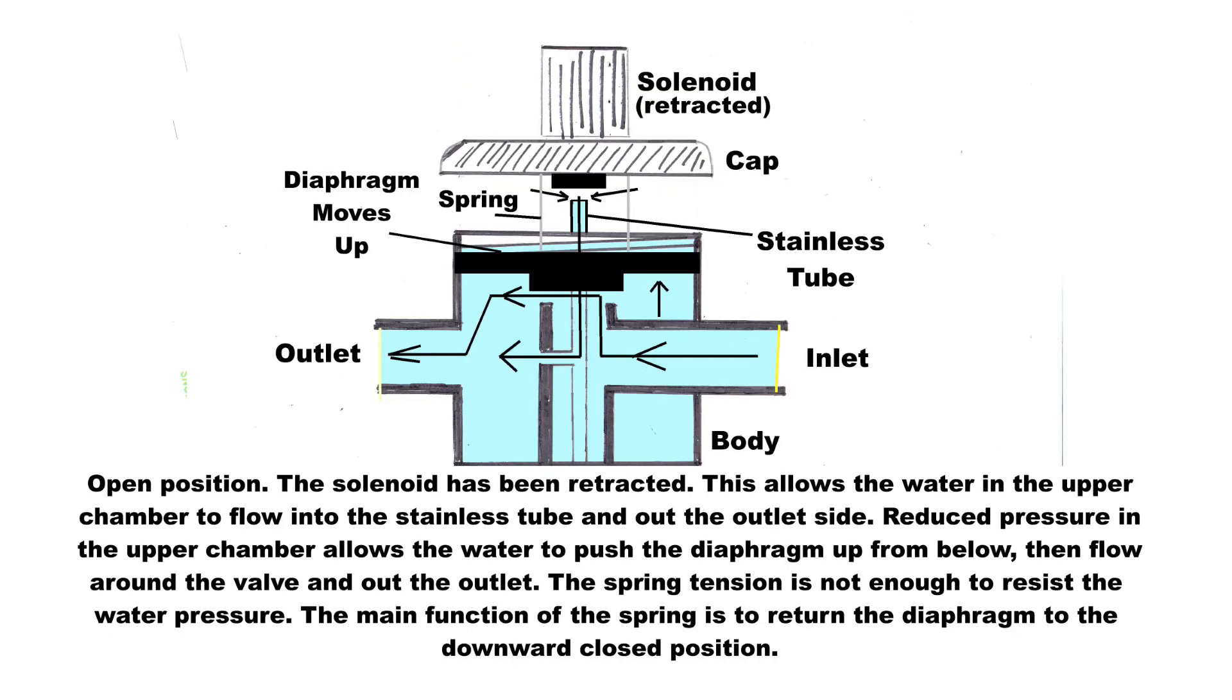Here's the open position. The solenoid has been retracted. This allows the water in the upper chamber to flow into the stainless steel tube and out the outlet side. Reduced pressure in the upper chamber allows the water to push the diaphragm up from below, then flow around the valve and out the outlet.